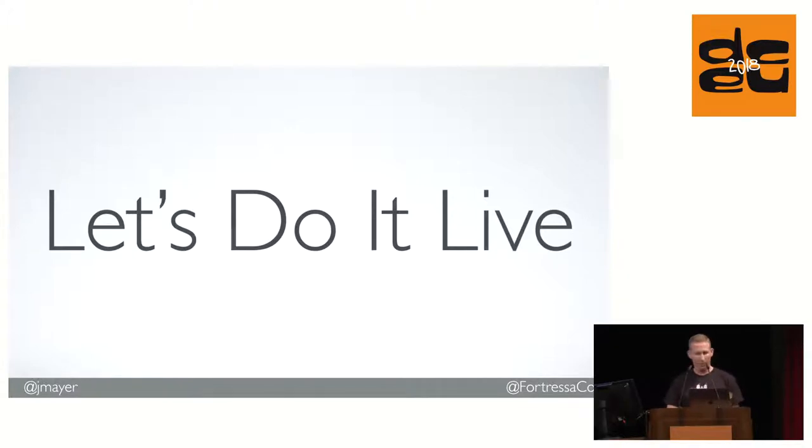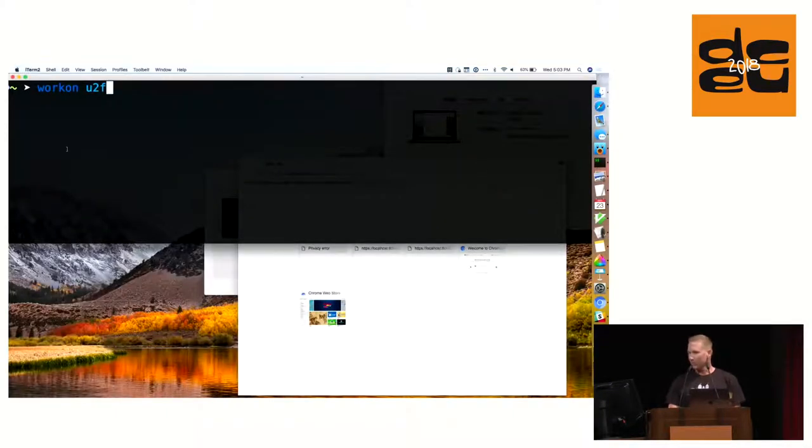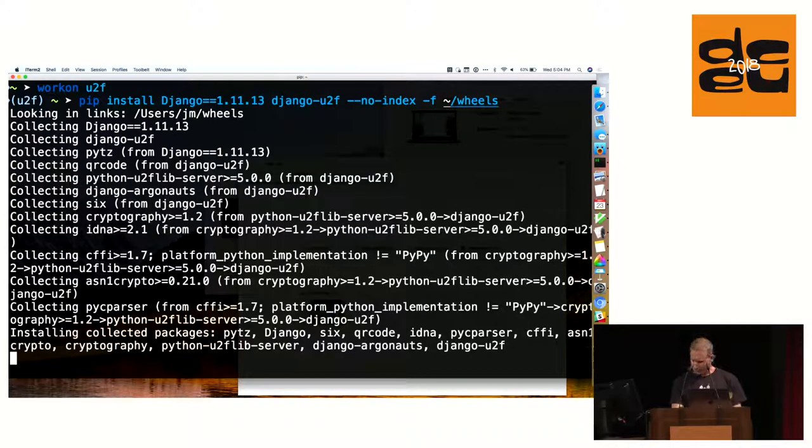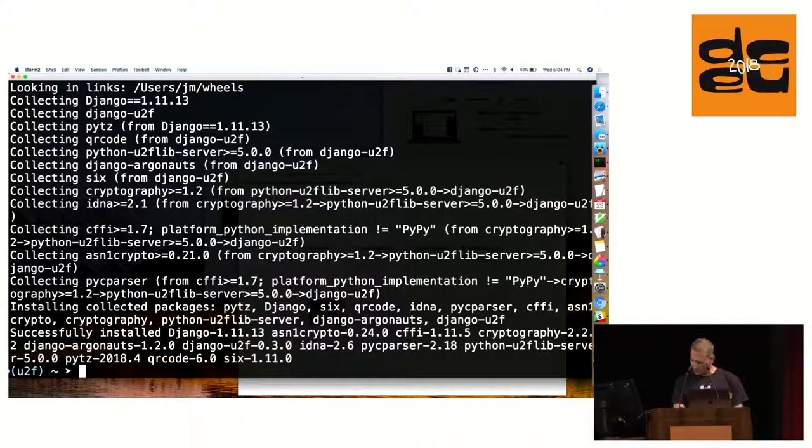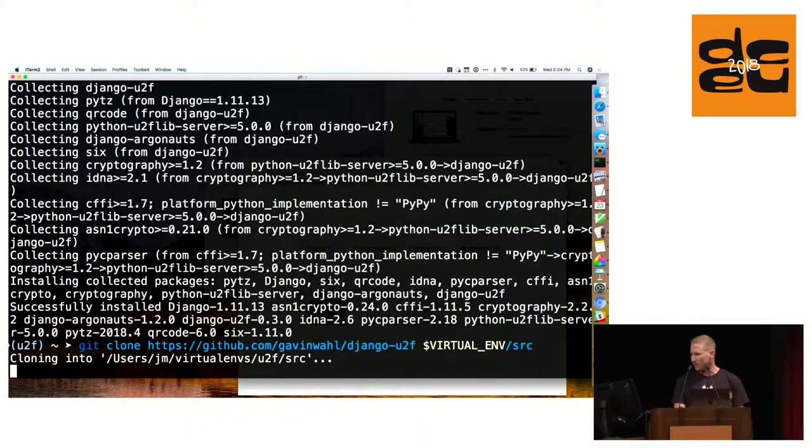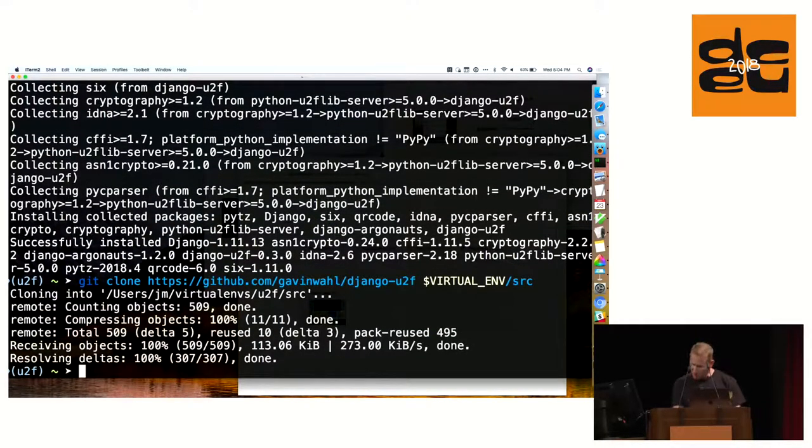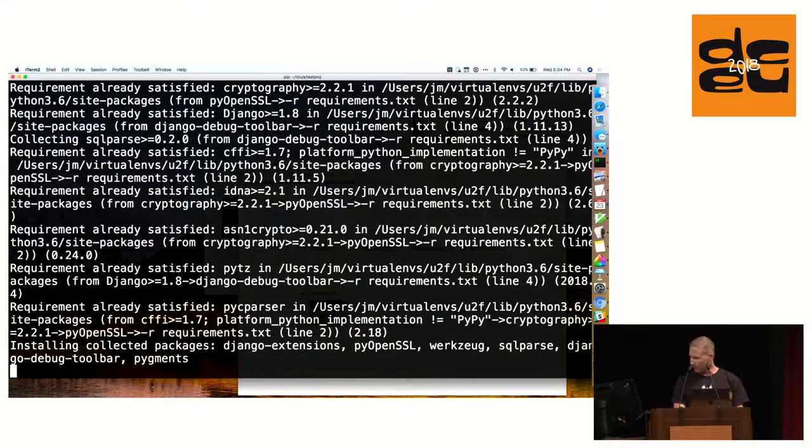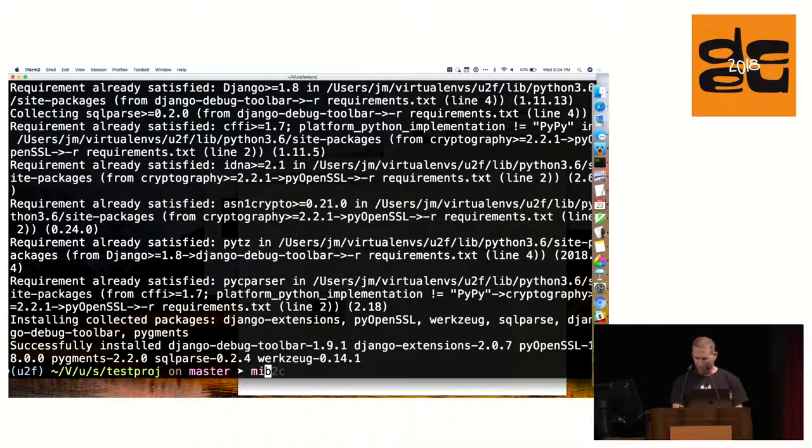I want to show you how easy it is to implement it and add multi-factor authentication to your applications. So let's do it live. What could possibly go wrong? First thing we're going to do is activate a virtual environment and pip install Django and the Django U2F package. Luckily, I've cached all these wheels, so I don't have to deal with Wi-Fi. Then we're going to clone the project and use a sample project that's inside it. Switch to that directory, install the requirements from cached wheels, and run migrations.